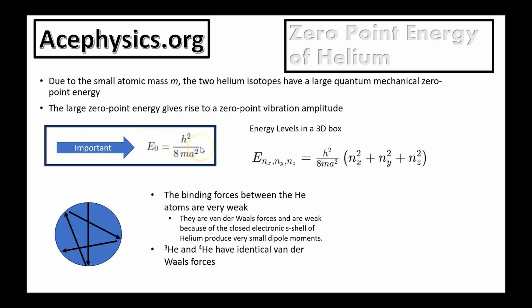H is Planck's constant, m is the mass of the particle, and A is the characteristic length scale of the system, representing the distance between helium atoms. The zero-point energy goes as 1 over m. Due to their small atomic masses, both helium isotopes have large quantum mechanical zero-point energy. This circle represents the volume the helium atom occupies — even at zero temperature, you cannot remove all the energy. The atom is left with some energy that causes it to vibrate and occupy some volume. A is the characteristic length of that volume.